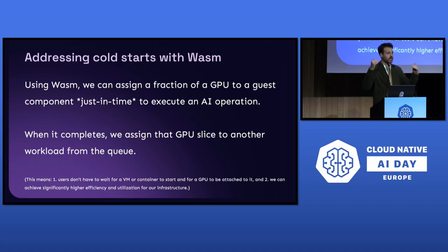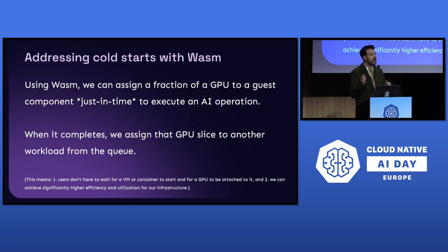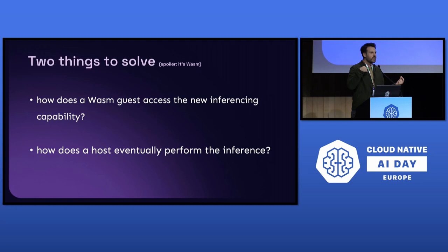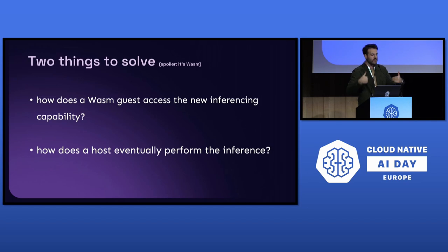When the operation completes, we can reassign that fraction of a GPU to another WebAssembly workload from the queue. That means whenever there's an incoming request, users don't have to wait for a VM or a 10-gigabyte container to be fetched, started, and attached — the GPU is already there. It means we can achieve significantly higher efficiency and utilization. Average Kubernetes cluster utilization is around 30%, which means there's a lot of idle capacity that could be reused across different applications and potentially different tenants.